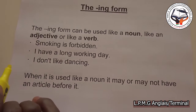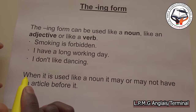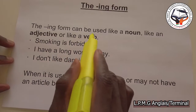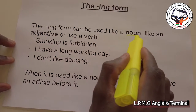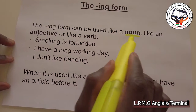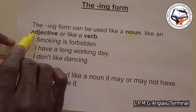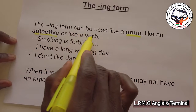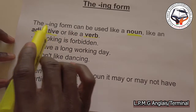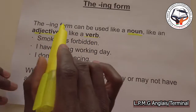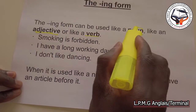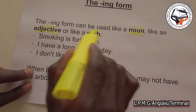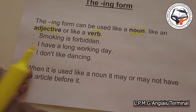The ING form. When do we use the ING form? The ING form can be used like a noun, like an adjective, or like a verb. That means we can use the ING form with a noun, with an adjective, or a verb. Let's give some examples.